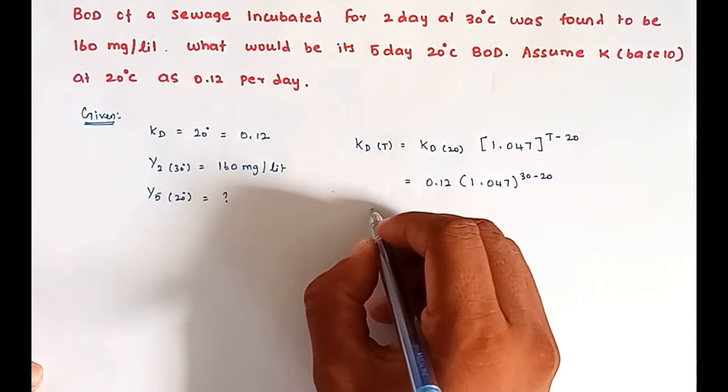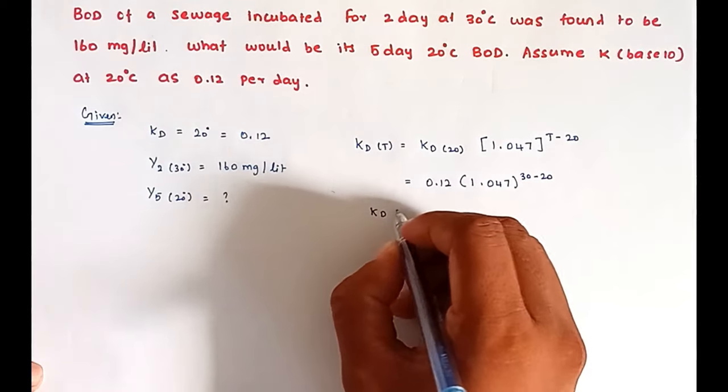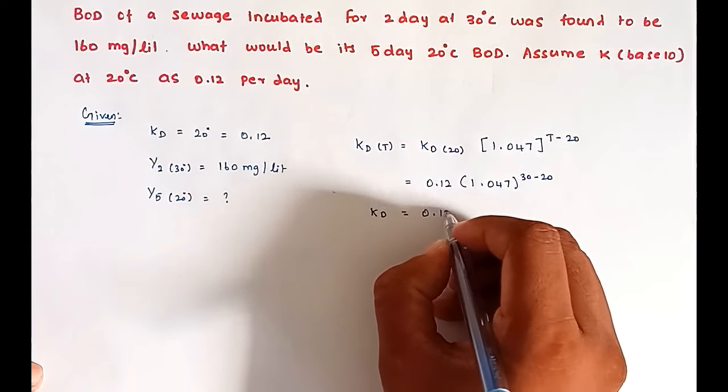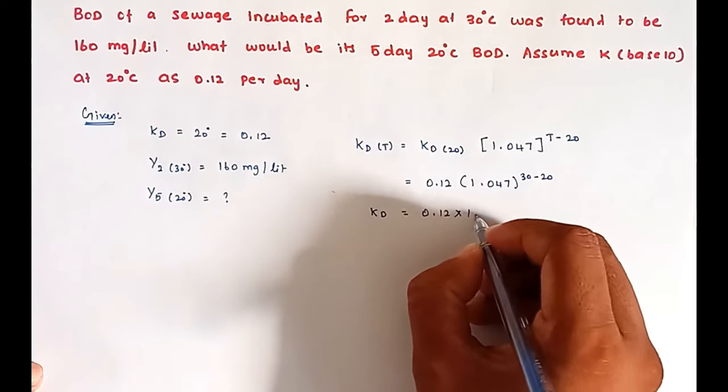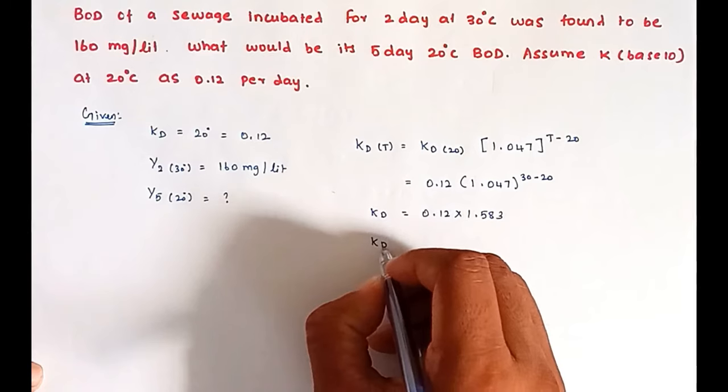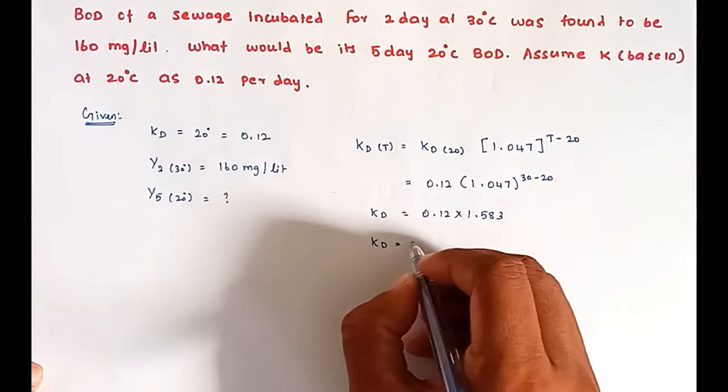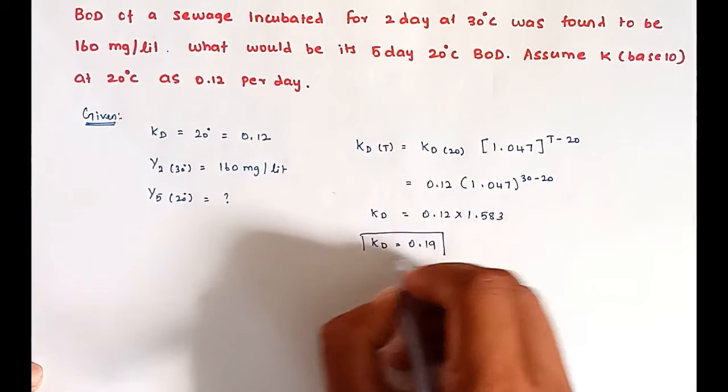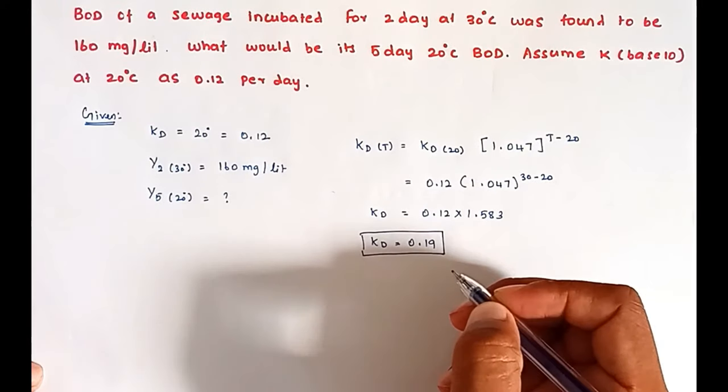So now KD equal to 0.12 times 1.583. So now KD equal to 0.19. This is the answer.